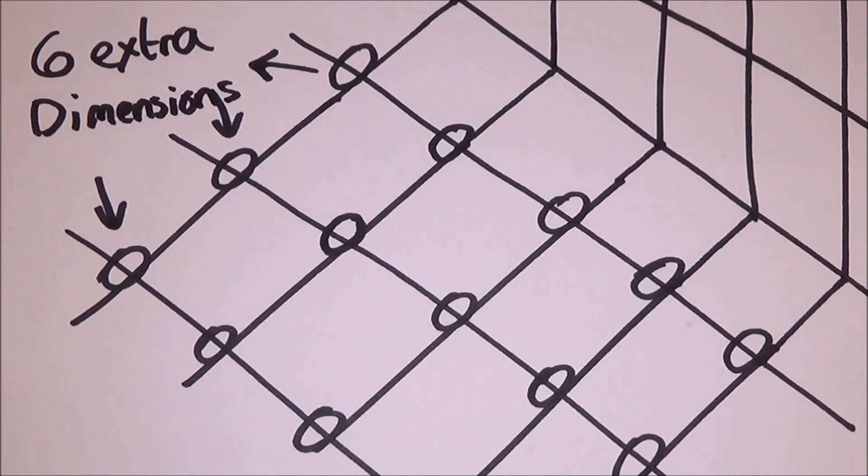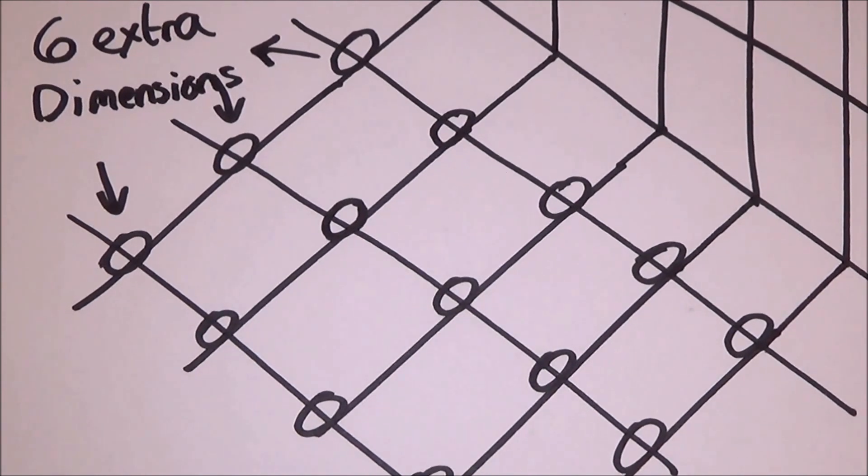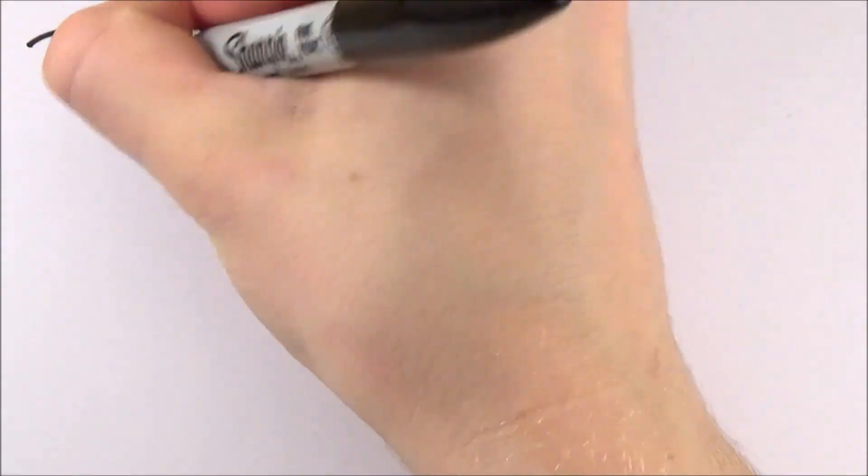So, if string theory is correct, then we have six extra dimensions, and they are not new ones. We see them every day, we just don't know it. It's like all these dimensions are just tiny balls on this 2D piece of paper.